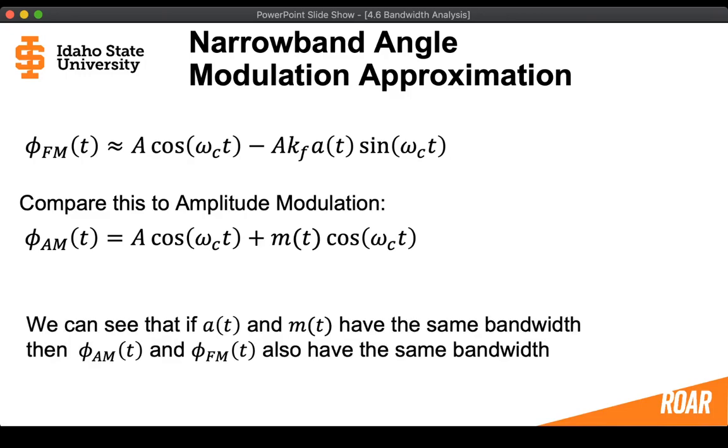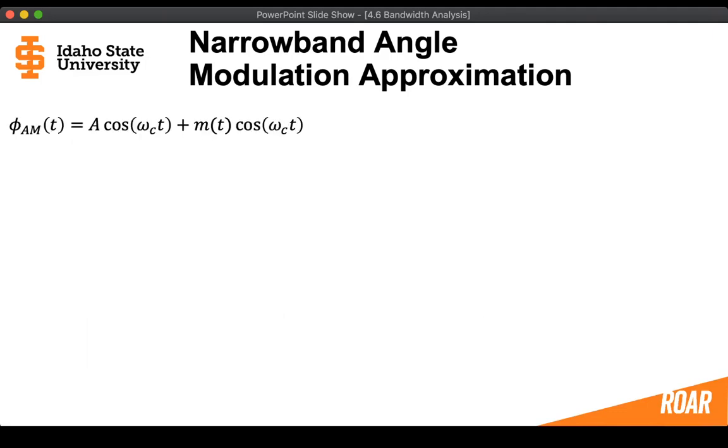So we can see that if A(t) and m(t) have the same bandwidth, and that was shown in the previous video, then that means that the amplitude modulated signal and the frequency modulated signal are going to have the same bandwidth so long as we apply that approximation. If we keep Kf times A(t), the absolute value of that very small, they're going to have basically the same bandwidth.